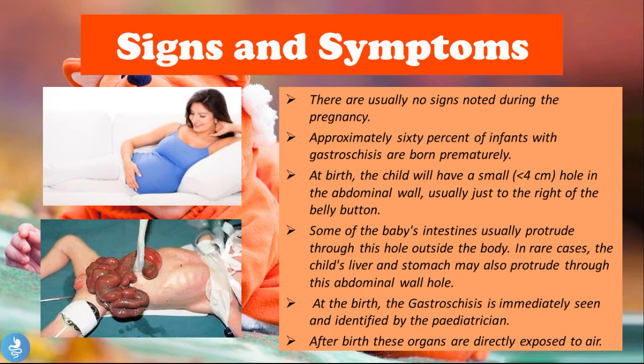Some of the baby's intestines protrude through this hole outside the body, and in rare cases the child's liver and stomach may also protrude through this abdominal wall hole. At birth, the gastroschisis is immediately seen and identified by the pediatrician — the anterior abdominal wall defect is readily apparent, so diagnosis is not usually a problem. After birth, these organs are directly exposed to the air, whereas during pregnancy they were in contact with amniotic fluid.